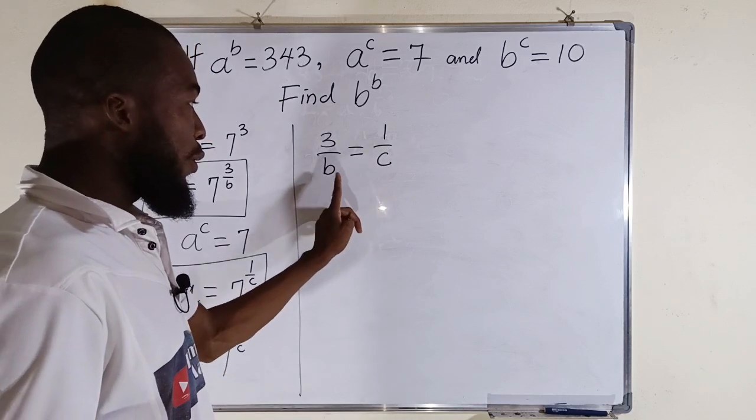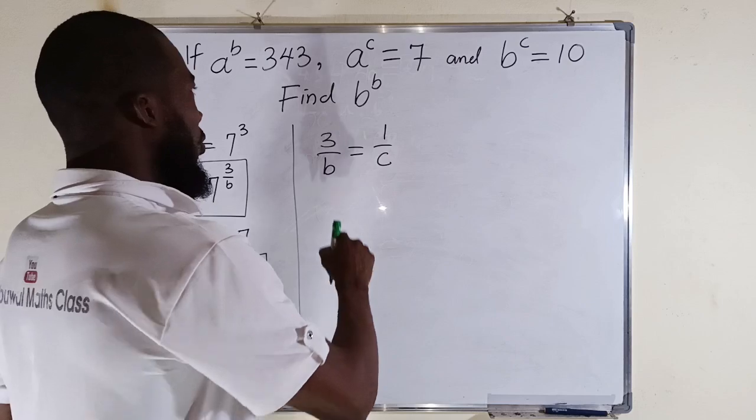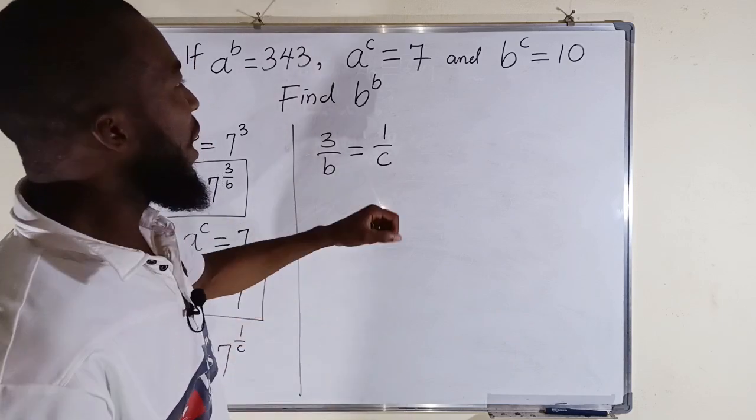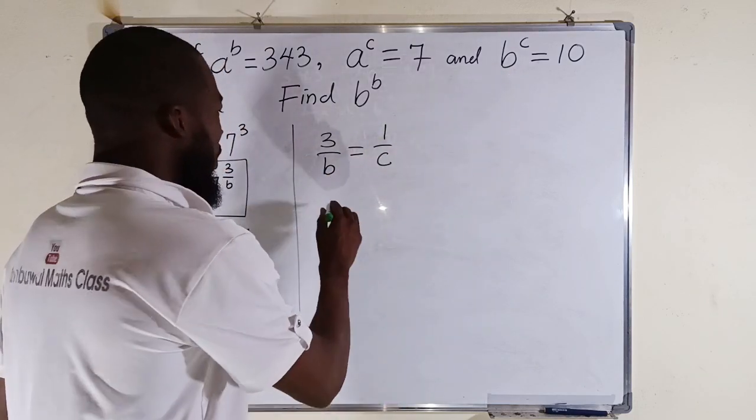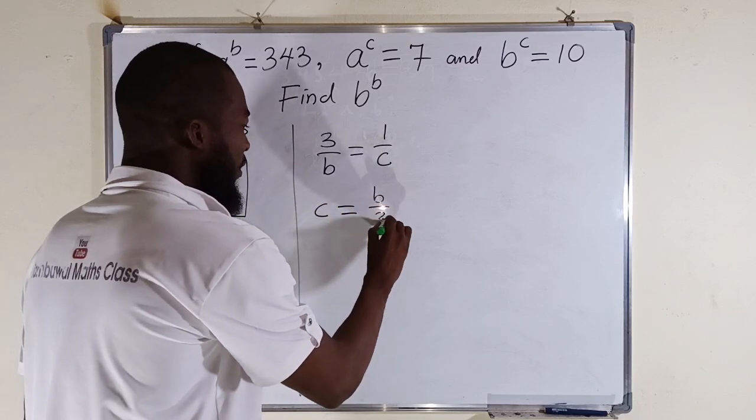3 divided by b is equal to 1 divided by c. What does this mean? It means that c is equal to b divided by 3 if you make c the subject. Because we want to make c the subject and plug it into the third equation. So c is equal to b divided by 3.